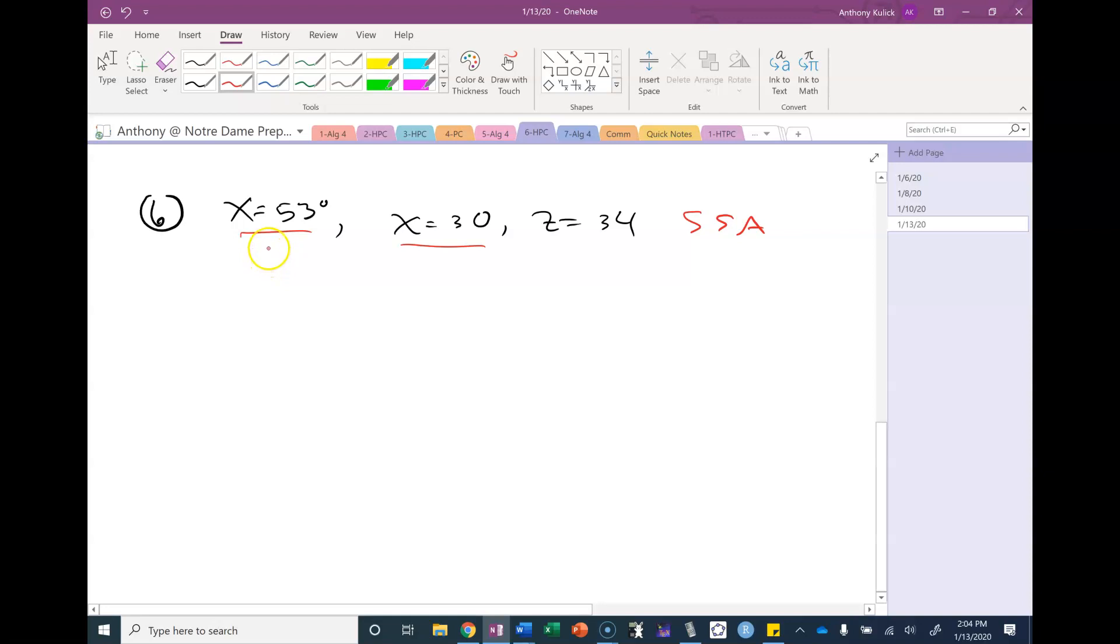First thing I'm going to do is look at whether my angle is acute or not. It is acute, so I could be in the ambiguous case situation. If it's obtuse, I cannot be. Next thing I need to do is compare the two side lengths because the side opposite my given angle is the smaller of the two sides. That means I've landed in the ambiguous case.